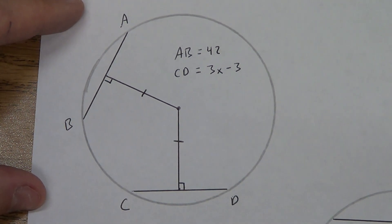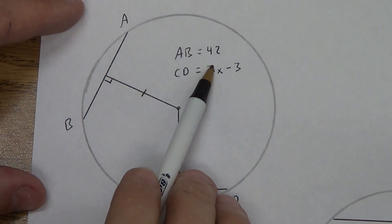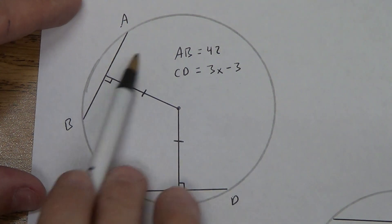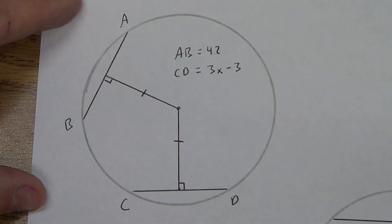So this is our first one. Go ahead and copy this down. That's a 42 right there, 3x minus 3. And draw this circle. You don't have to use your compass to draw it, just draw a rough quick sketch of it and copy this down.